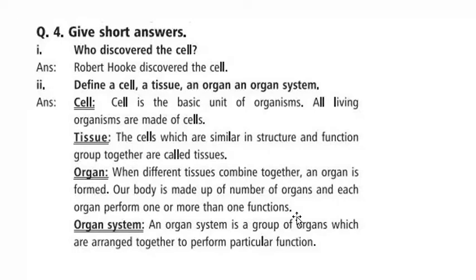Organ system — an organ system is a group of organs which are arranged together to perform a particular function. Organ system means a group of organs. Those organs join together and form an organ system to perform specific functions.